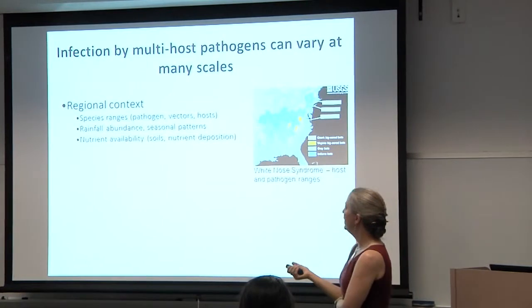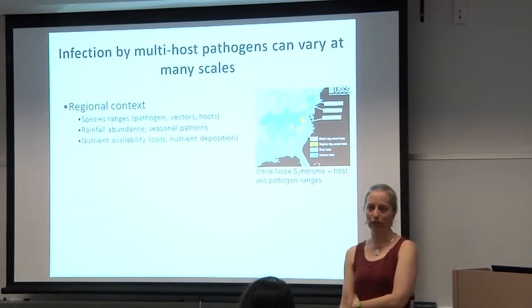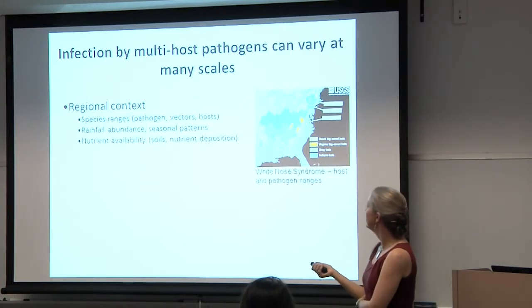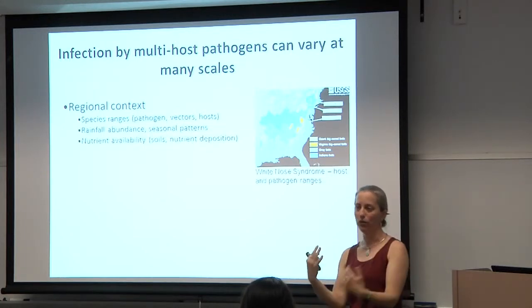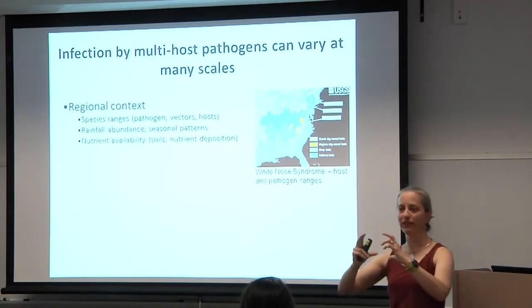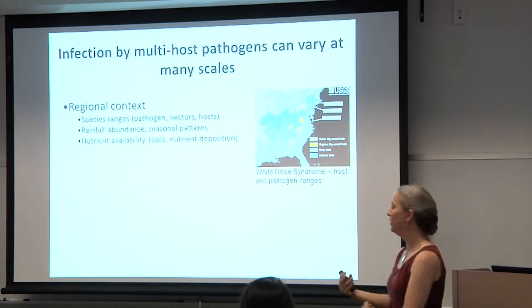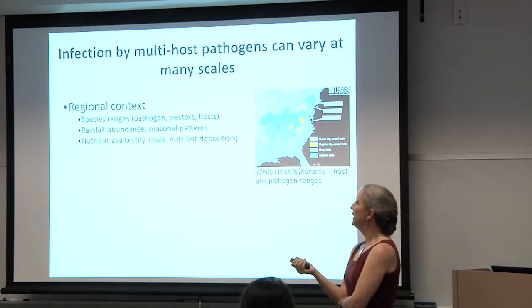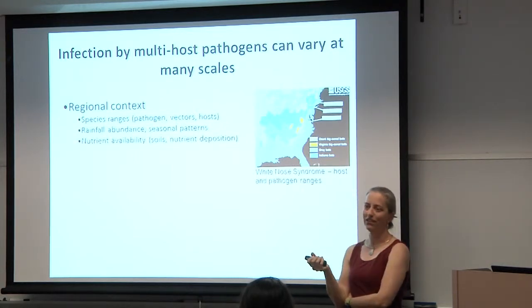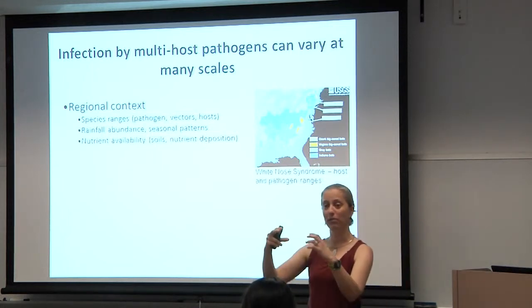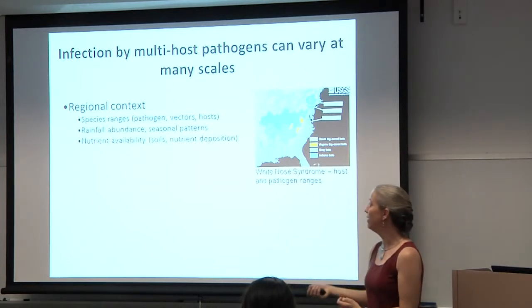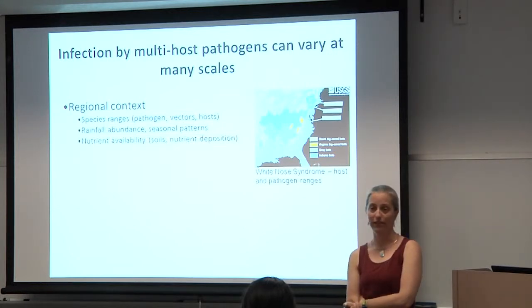This can be driven by any number of things. This is a map of white-nose syndrome — it shows the overlap of virus and host species. In some cases, overlapping ranges can be based on seasonal variation or rainfall abundance. Think about this in terms of nutritional environment or regional context for human pathogens — we know that human pathogens don't persist everywhere. For example, with malaria, that maps quite closely onto rainfall abundance and seasonal patterns. It's also emerging that it's associated with human nutrition.